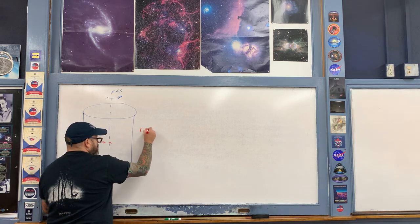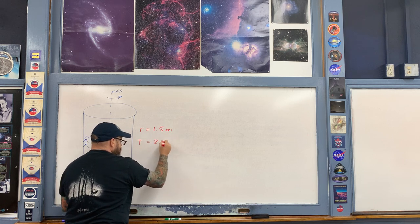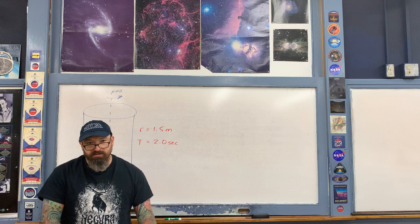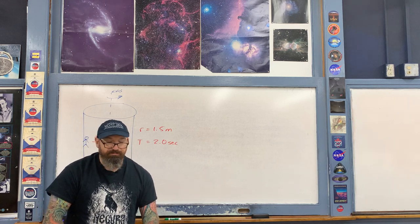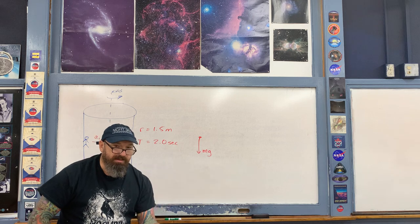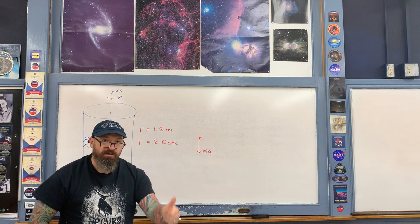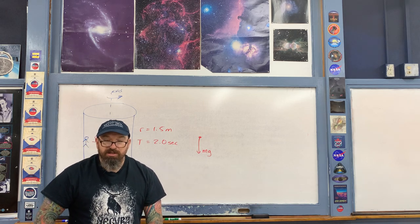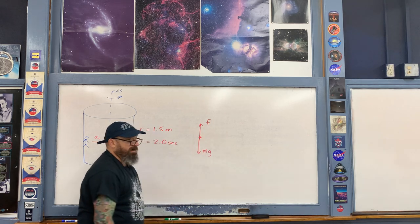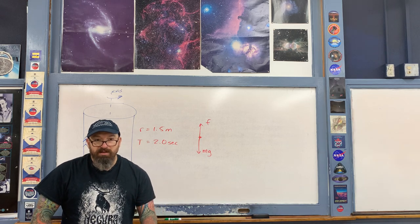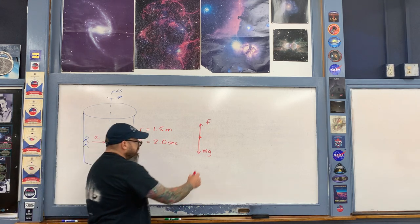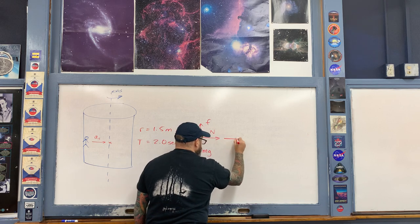The numbers — radius r = 1.5 meters, period T = 2.0 seconds — are typical for this ride. Three forces act on the person: first, gravity mg straight downwards; second, static friction pointing upwards, preventing the rider from slipping; and third, a normal force pointing inwards towards the center of the circle, providing the centripetal acceleration.